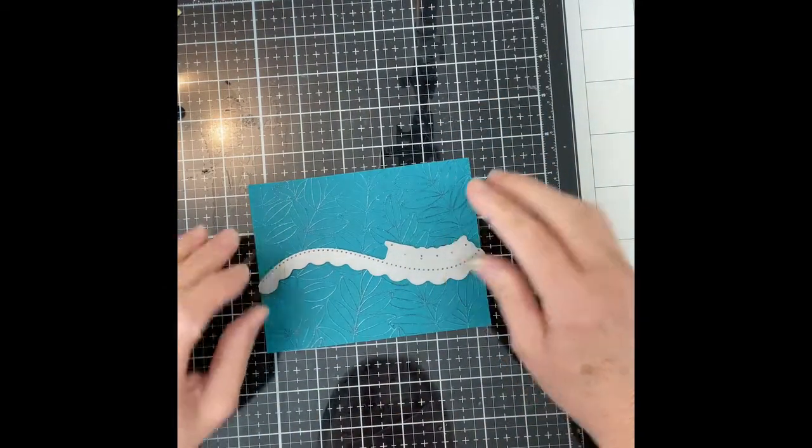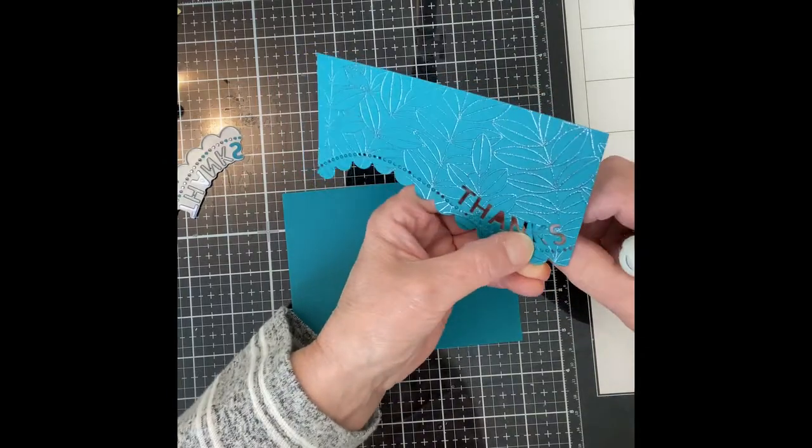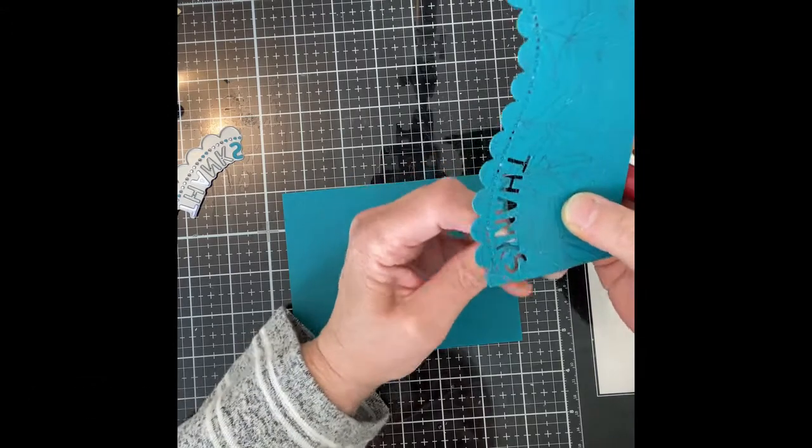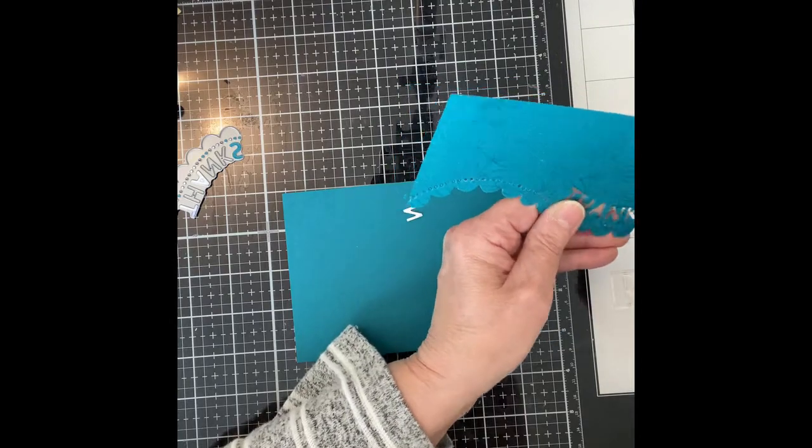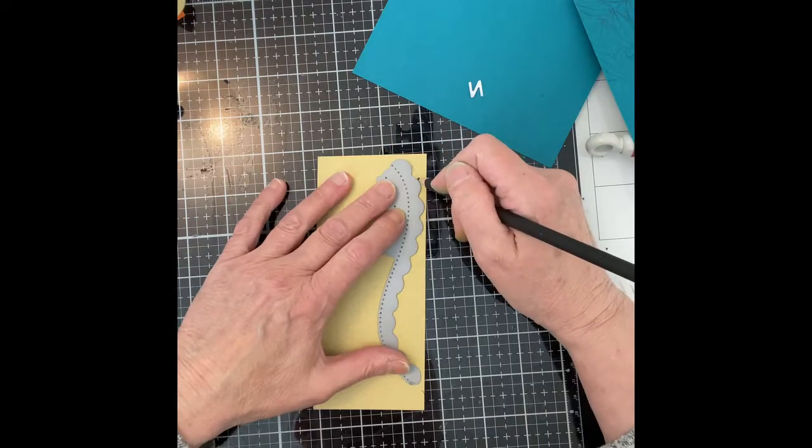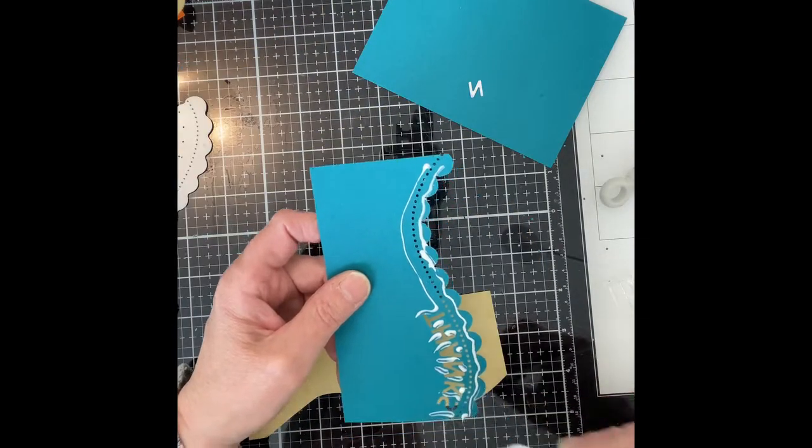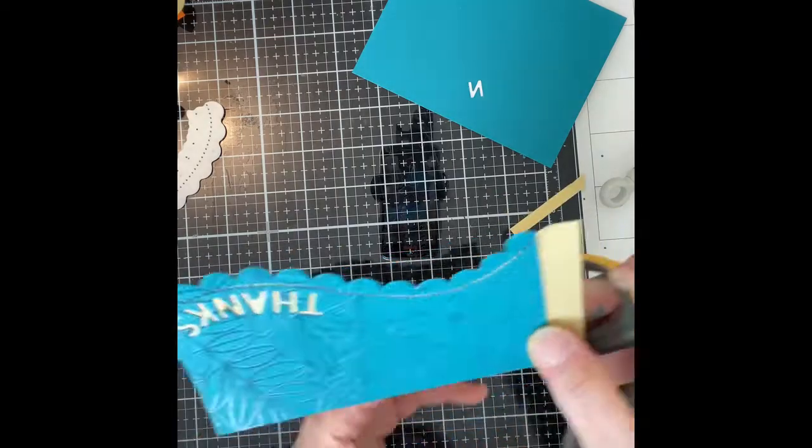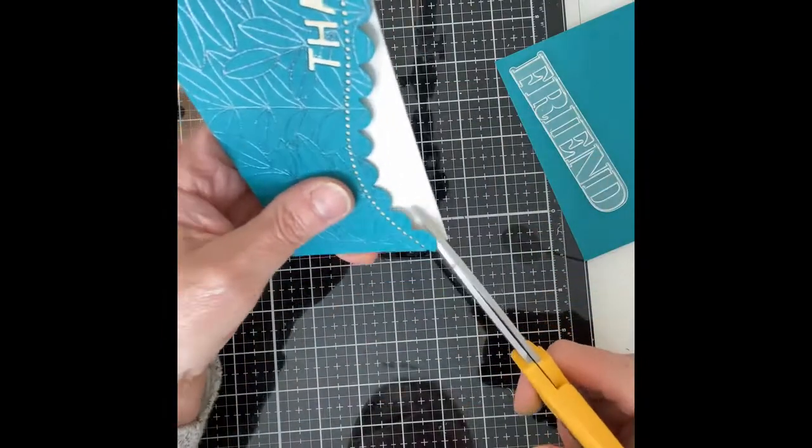The panel was first trimmed to an A2 size in the landscape orientation, and then die-cut two-thirds of the way down using Simon Says Stamp's Thanks Scallop Border. Another piece of teal cardstock was trimmed down to four and a quarter inches by five and a half inches. Matte gold cardstock was cut down to fit underneath the scalloped border so that the die-cuts would stand out. This panel was then mounted on white sheet foam to provide some dimension.